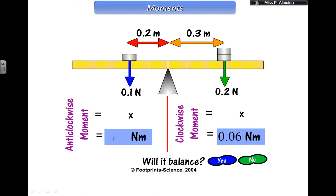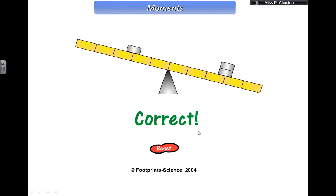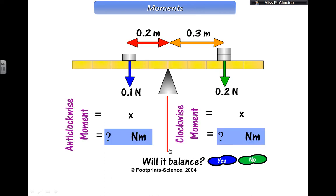Here, 0.2 times 0.1, so 0.2. Will it balance? No. And it goes in the direction of the bigger moment. So it goes in this direction, because this one has more turning effect than this one. So the clockwise moment has a bigger turning effect than the anticlockwise moment. Let's try another one.